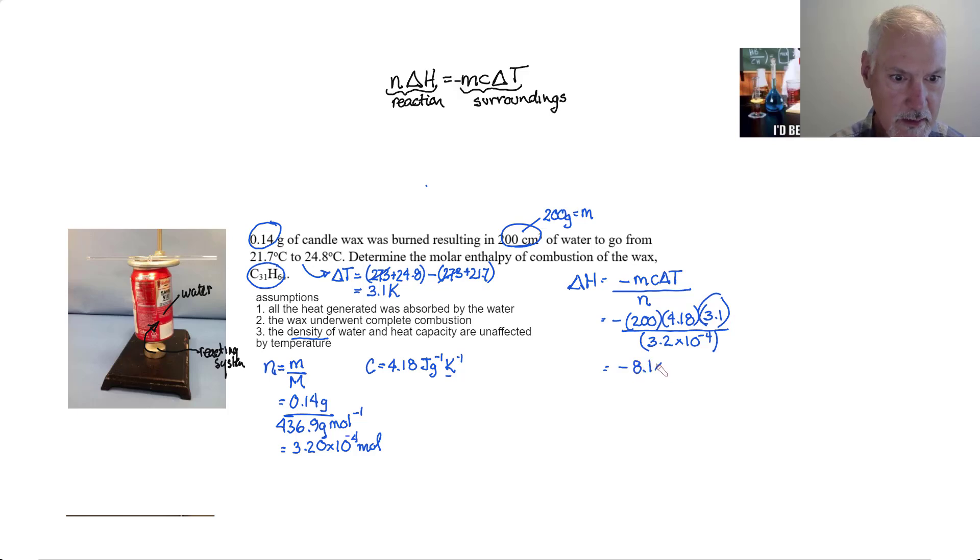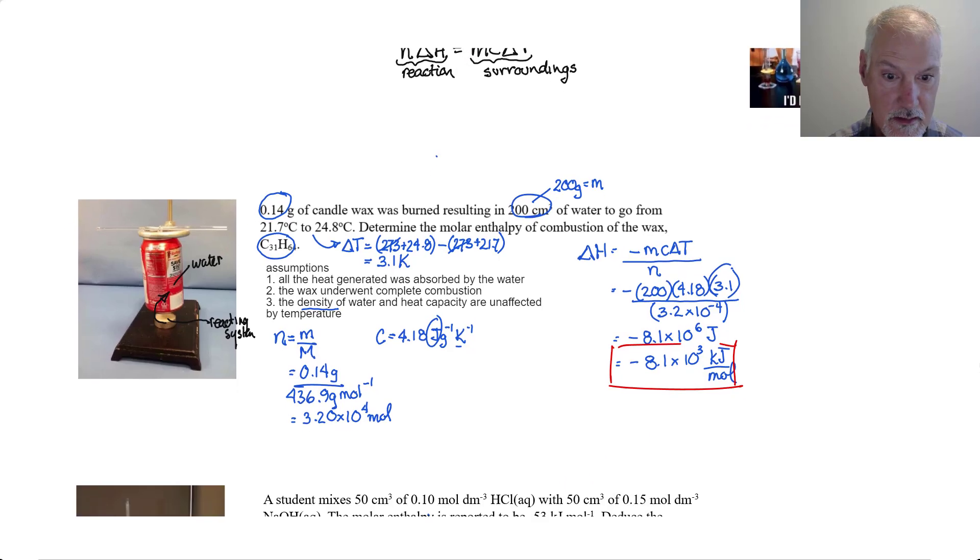8.1 times 10 to the 6 and that would have units of joules because that's all that would be left and since our preferred units in kilojoules divide that by 1000, minus 8.1 times 10 to the 3 kilojoules per mole. Let's try another question.